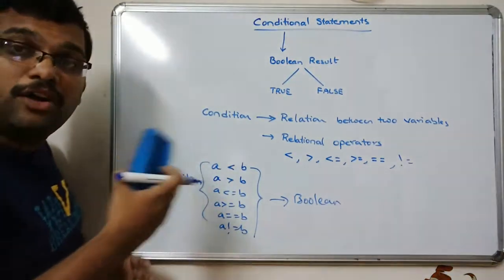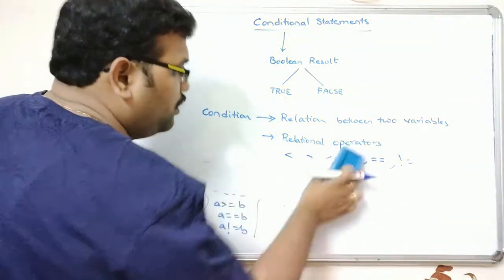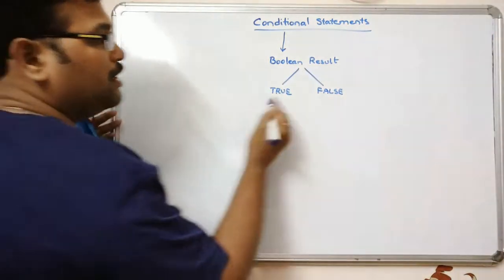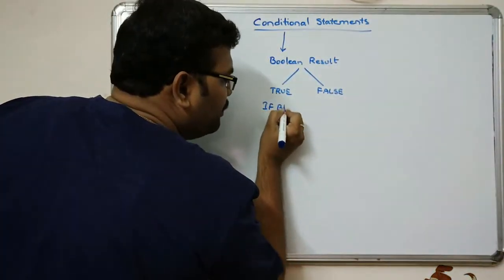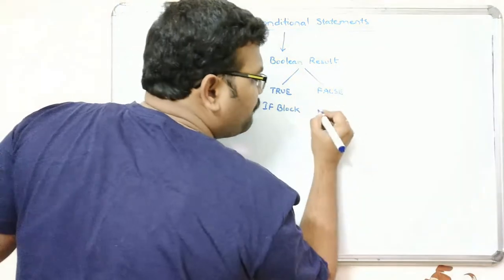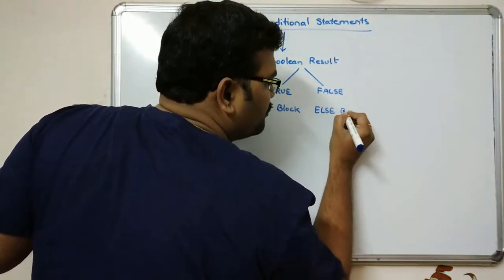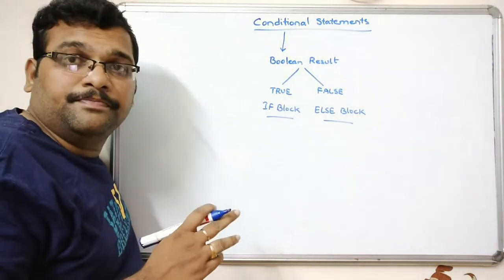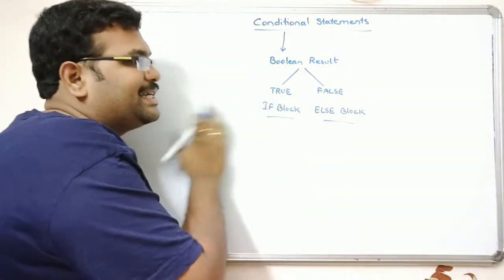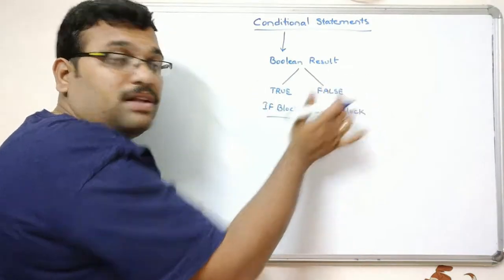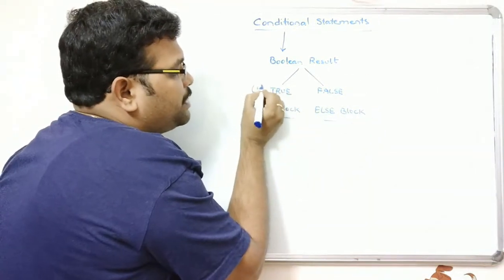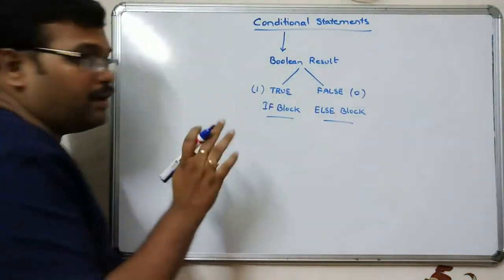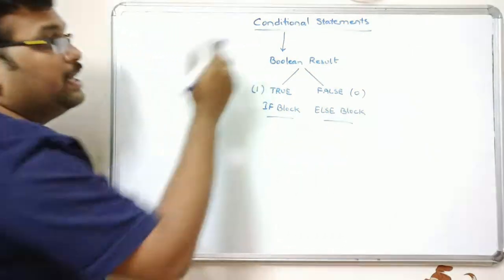Based upon the result of this condition we choose which statements are to be executed. If the result is true, the if block will be executed; if it is false, the else block will be executed — but not both. The if block is considered as true (represented as 1) and the else block as false (represented as 0).